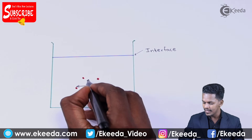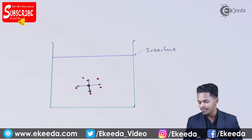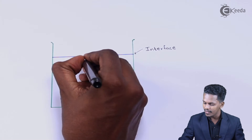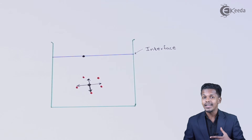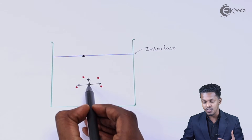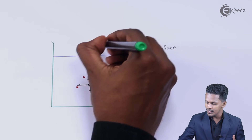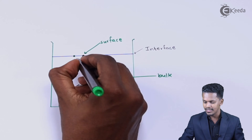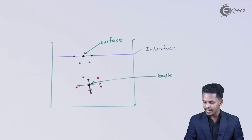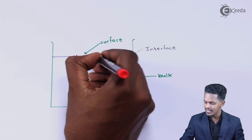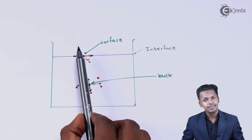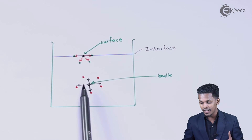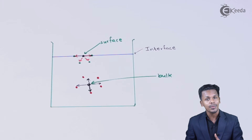Now, what about surface particles — the particles present on the surface? A surface particle is not surrounded by an equal number of particles as a bulk particle. It is surrounded by other particles on the sides and at the lower part, and there is a force of attraction sideways and downward, but there is no such attraction towards the upper face because there are no particles present above it.